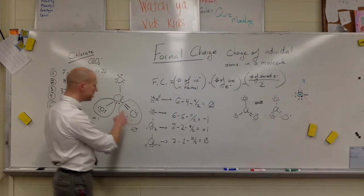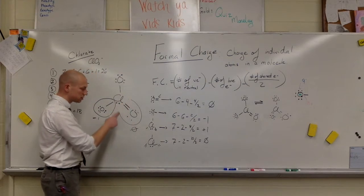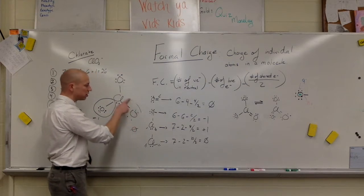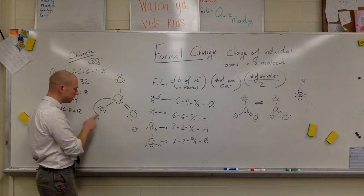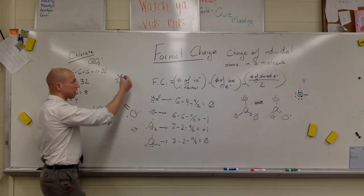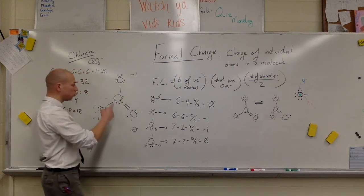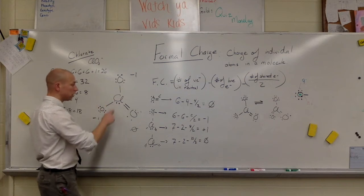So if we construct it like this, we're going to have a zero here, we're going to have a negative one over here, and we're actually going to have a negative one over here, giving us a total charge of negative two.